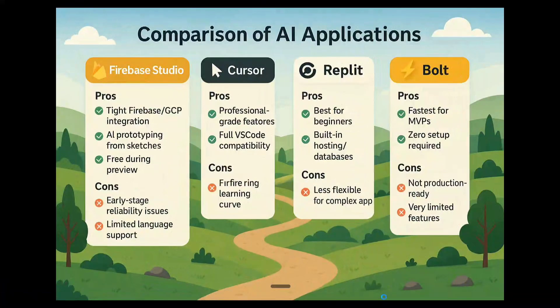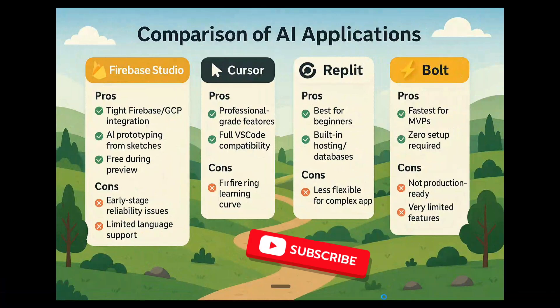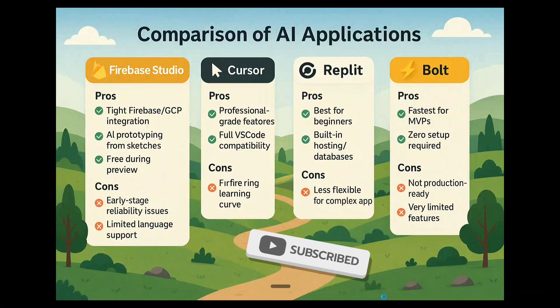Hi everyone! Google has just now dropped Firebase Studio, which can generate web applications given just a prompt. Now there is a huge number of applications doing the same thing — be it Cursor, Replit, Bolt, or Firebase Studio. In this short video, I will be explaining the difference between all four and what to use when.